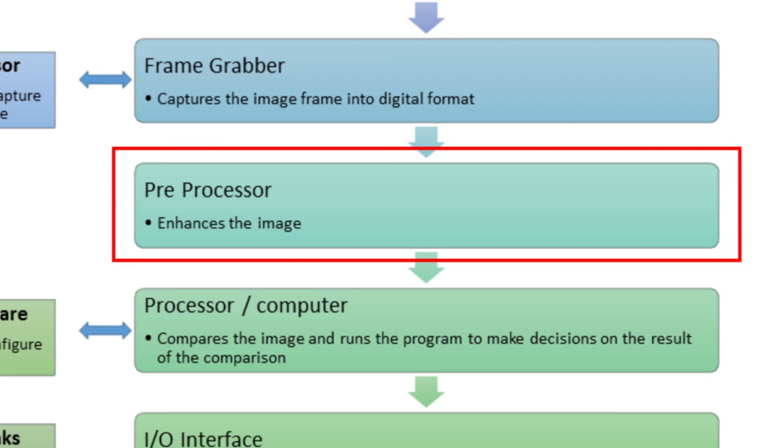Pre-processing focuses on enhancing the acquired image. The light helps acquire the image; the frame grabber acquires and converts it to digital format. Whatever image has been acquired may not be of very good quality — it could be due to various disturbances or the sensor. We tend to pre-process the image so that the image is enhanced in terms of quality, or it could be for segmentation purposes. Basic image processing techniques are used in this stage. This slide talks about the various image processing techniques available for machine vision.